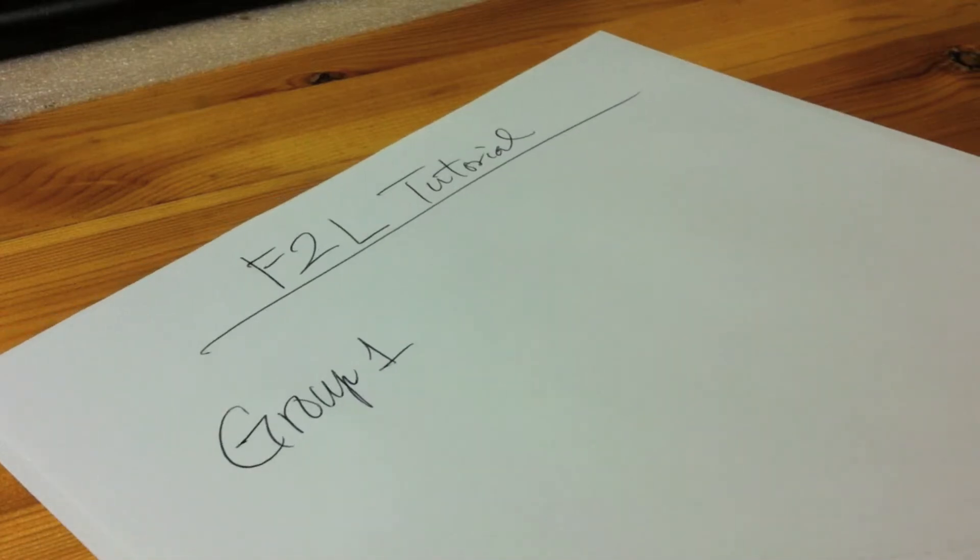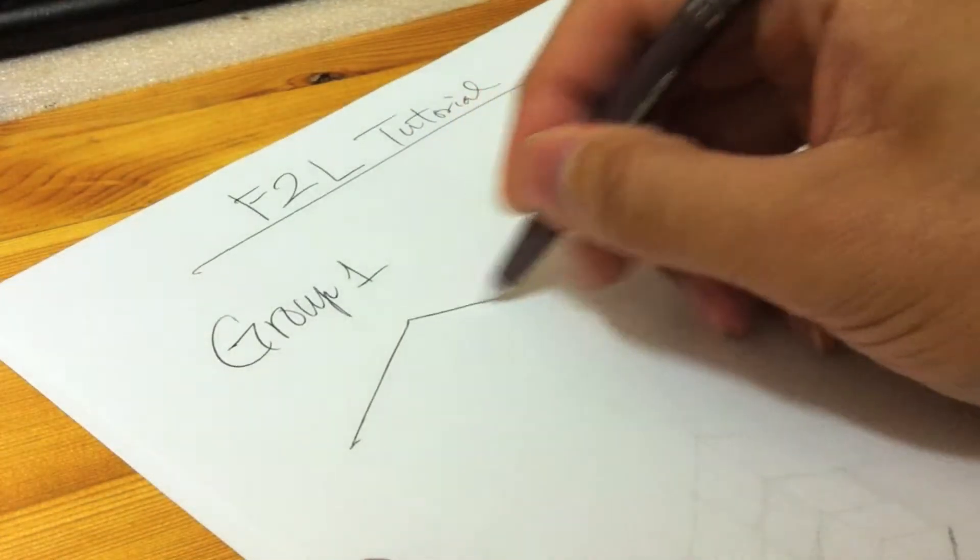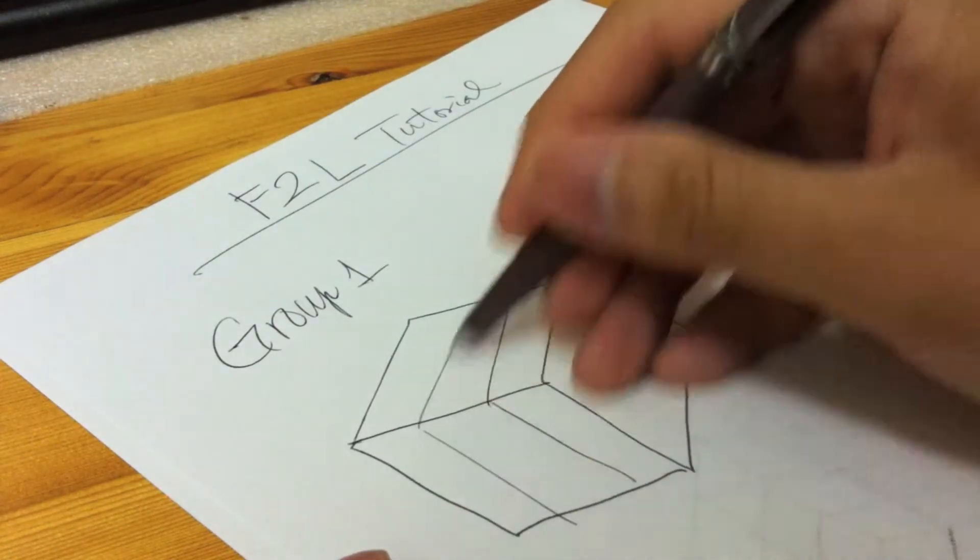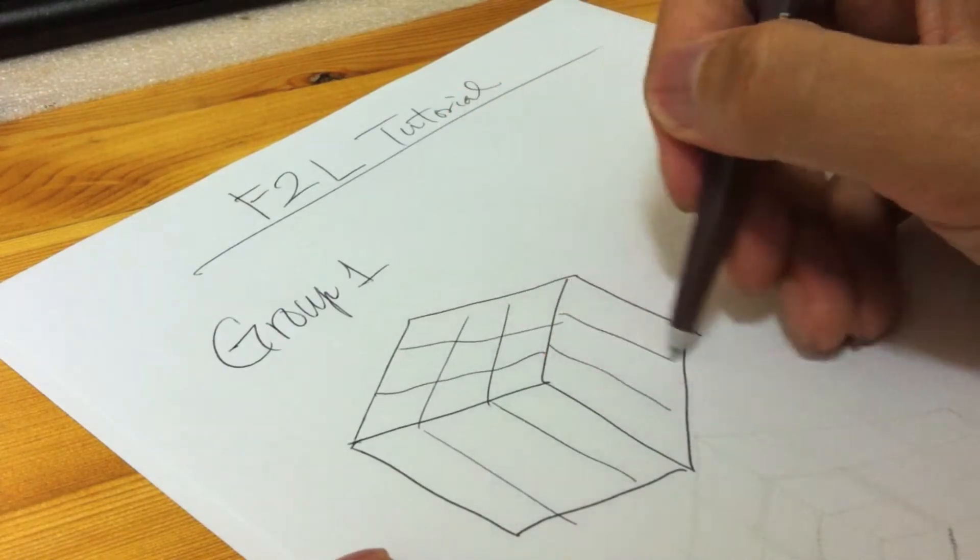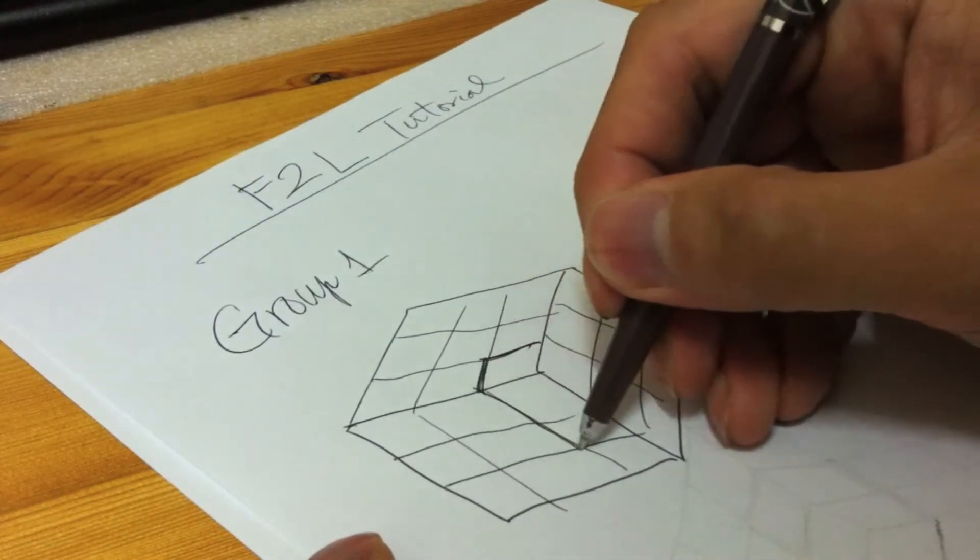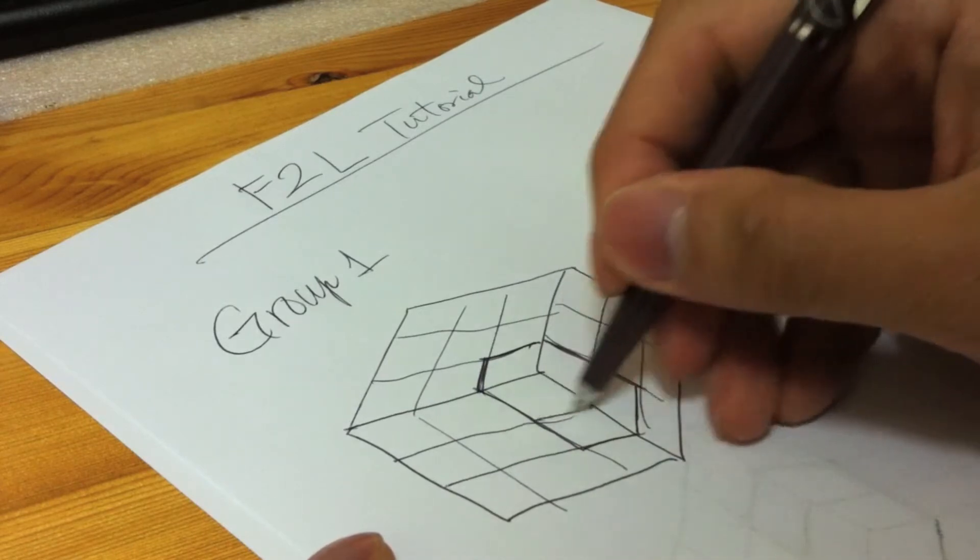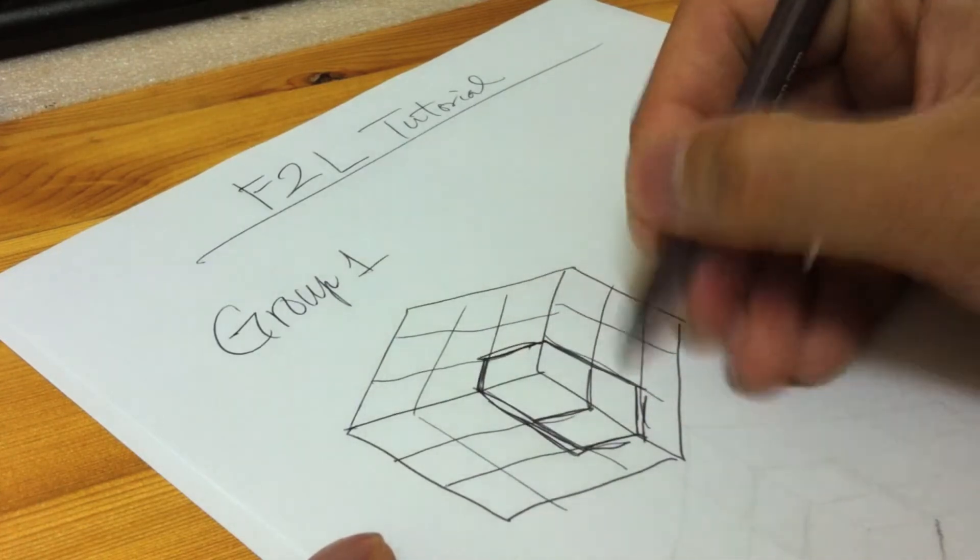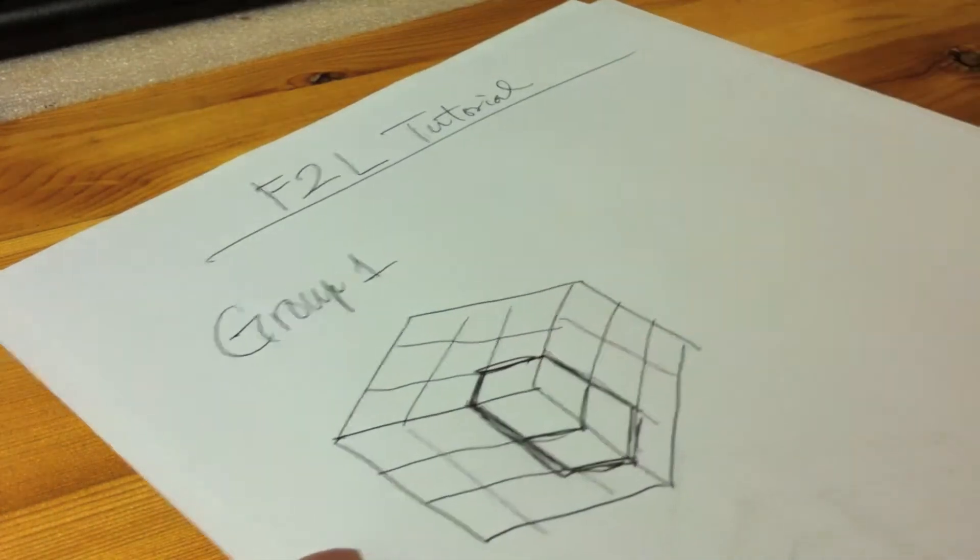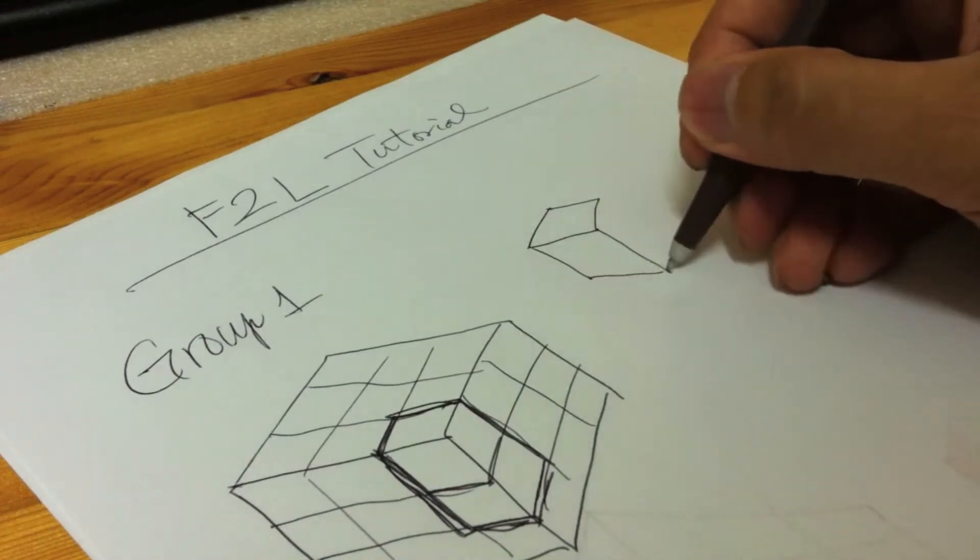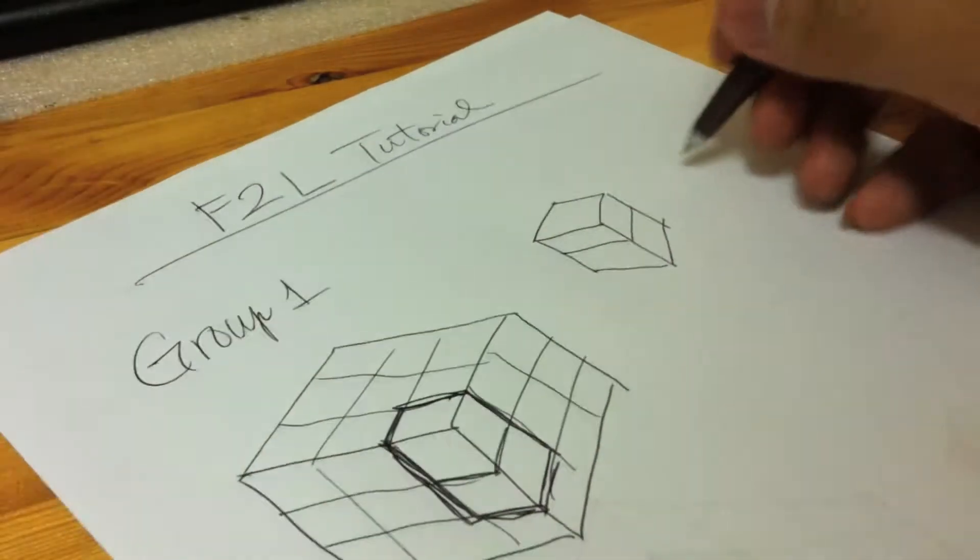So now we start the discussion with group one. I'll illustrate the idea by drawings. Here is a cube, and our targeted pieces of our selected column is located here. If I detach these two pieces, we concentrate only on these two pieces, not on the other colors.